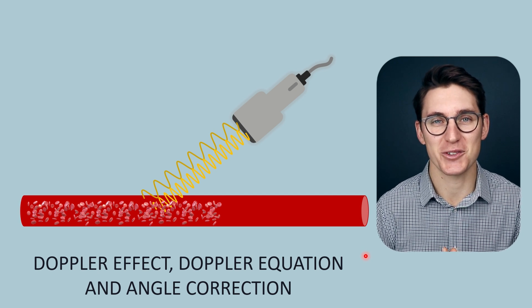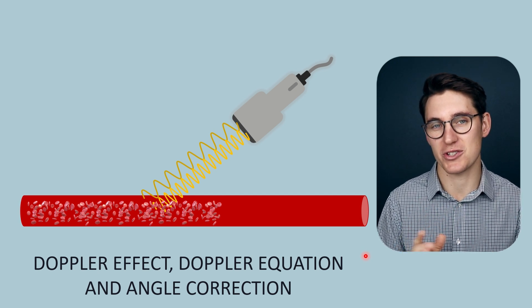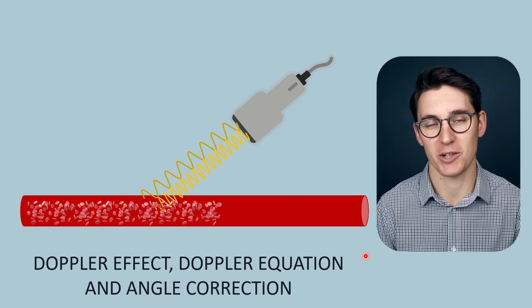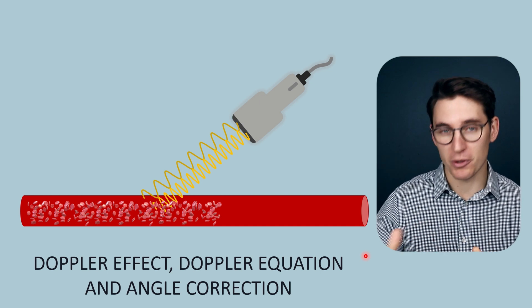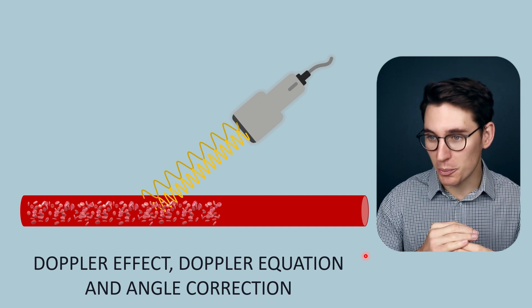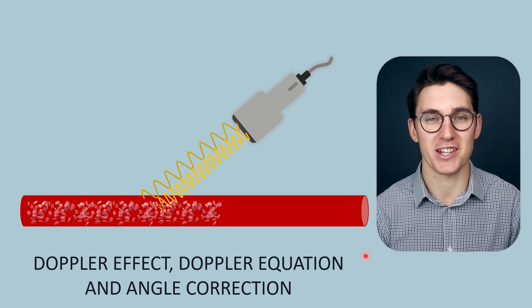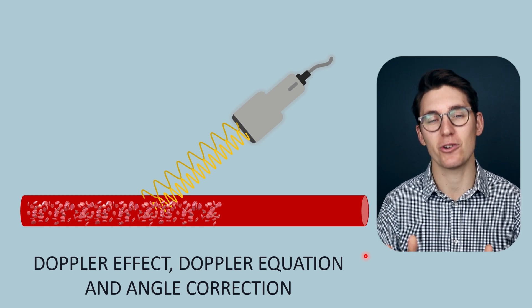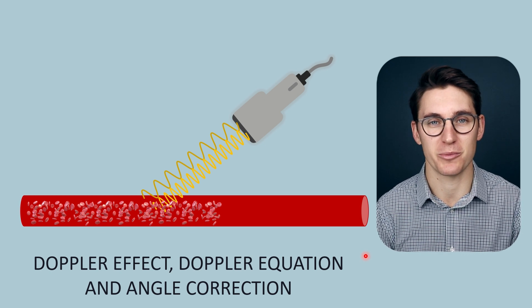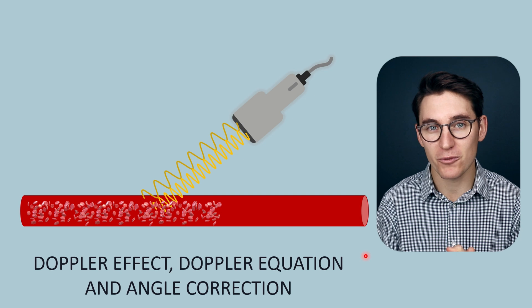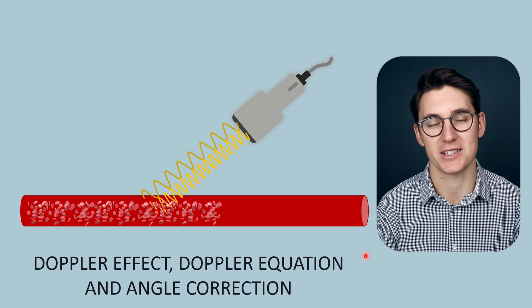Hello and welcome back. In the next few talks we're going to be covering Doppler ultrasound physics, and we'll start off today by looking at some of the basics: the Doppler effect, Doppler shift, the Doppler equation, and then rounding things off by looking at angle correction in our Doppler ultrasound machine and some of the pitfalls that we can encounter when trying to angle correct.